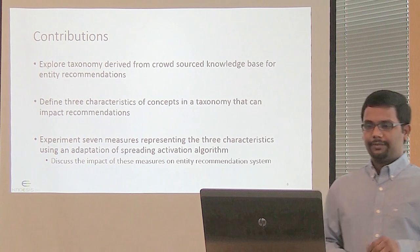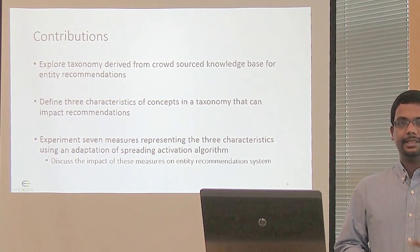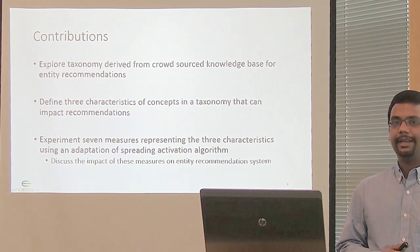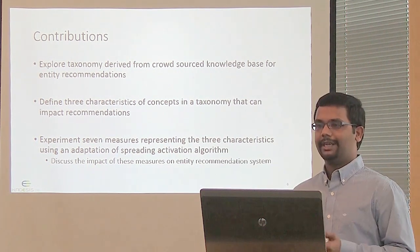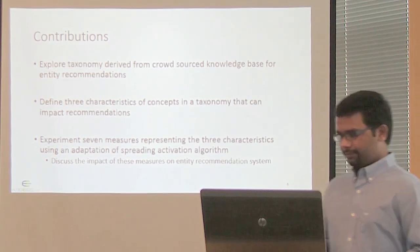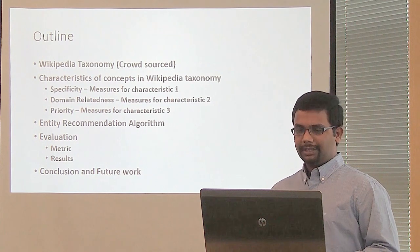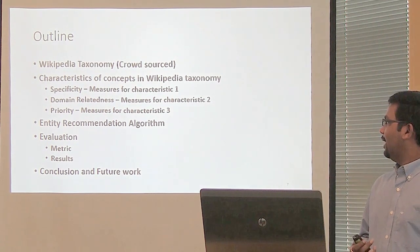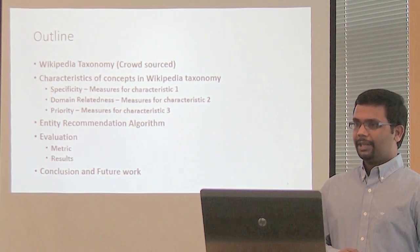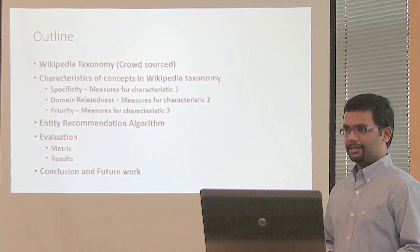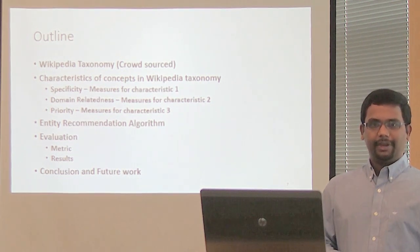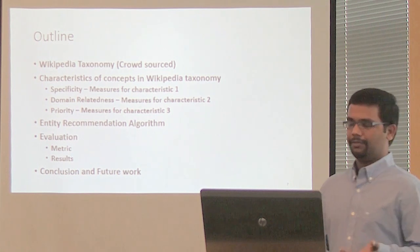I have experimented with seven measures representing these three characteristics, using an adaptation of the spreading activation algorithm, and discuss the impact of these measures on entity recommendation systems. In this talk, I will cover the Wikipedia taxonomy, the three characteristics I explored, the entity recommendation algorithm used to study these characteristics, the measures used, and the evaluation results.